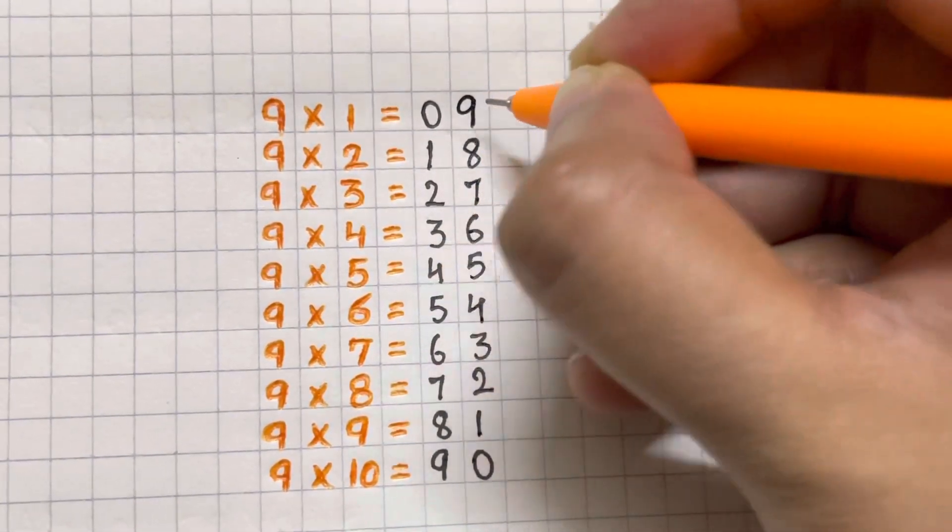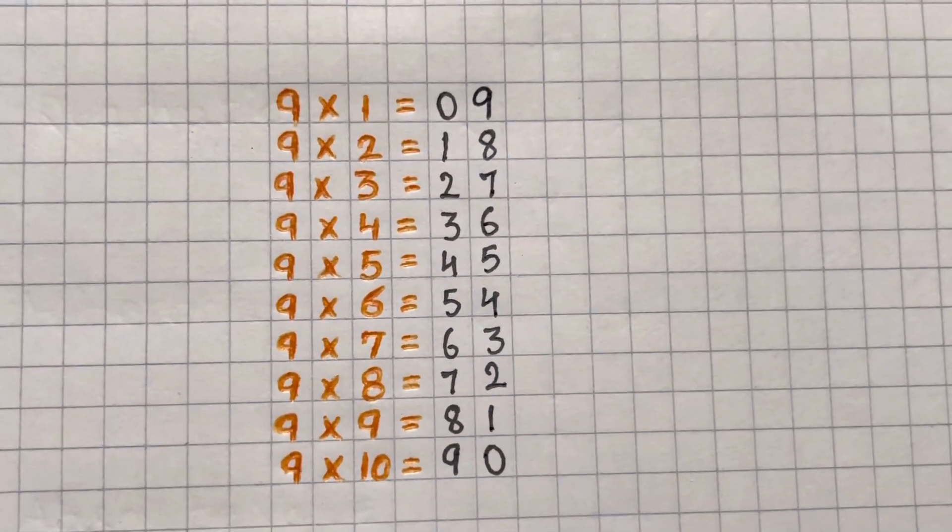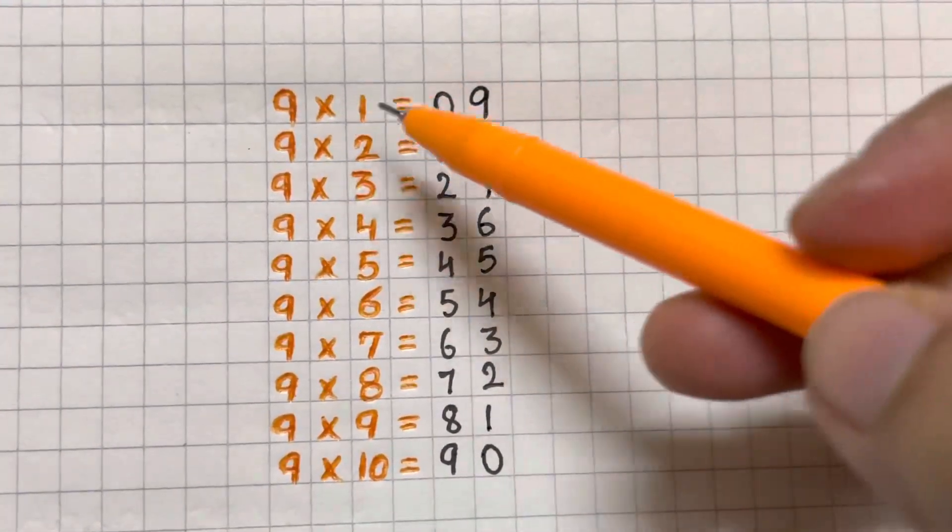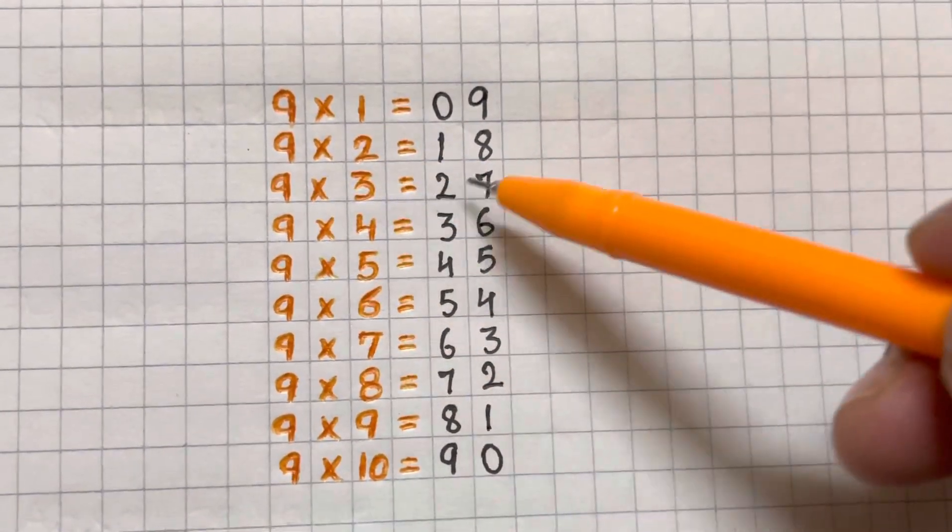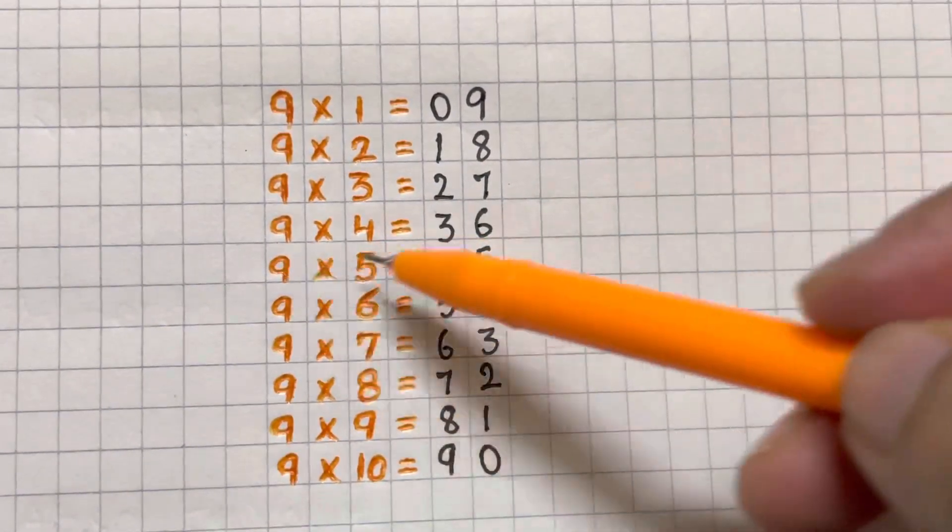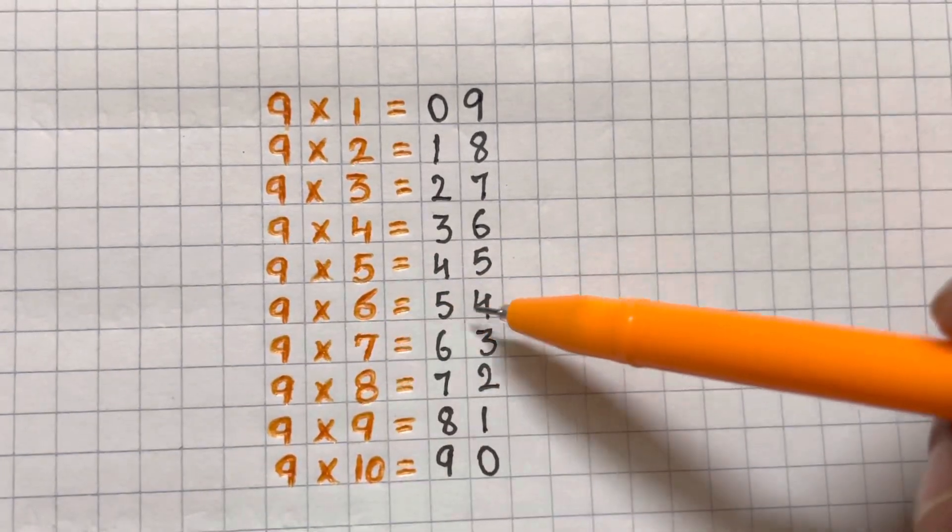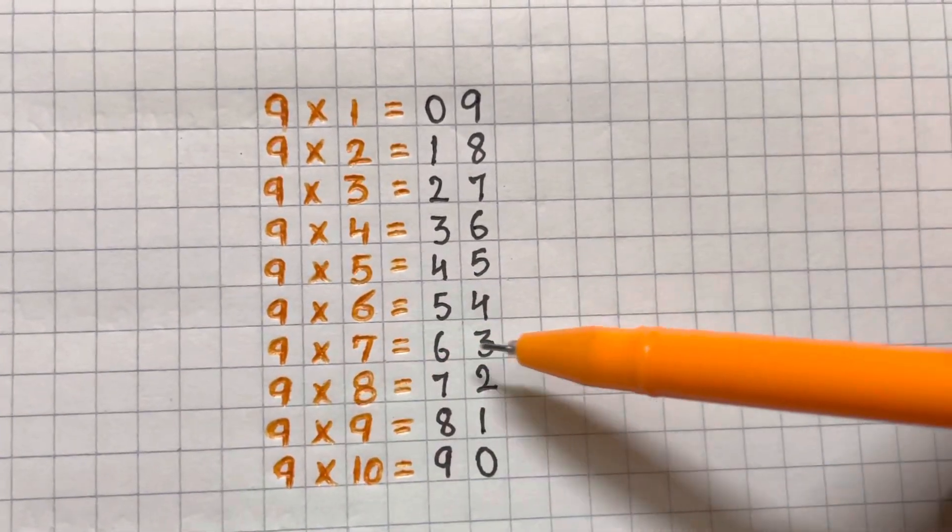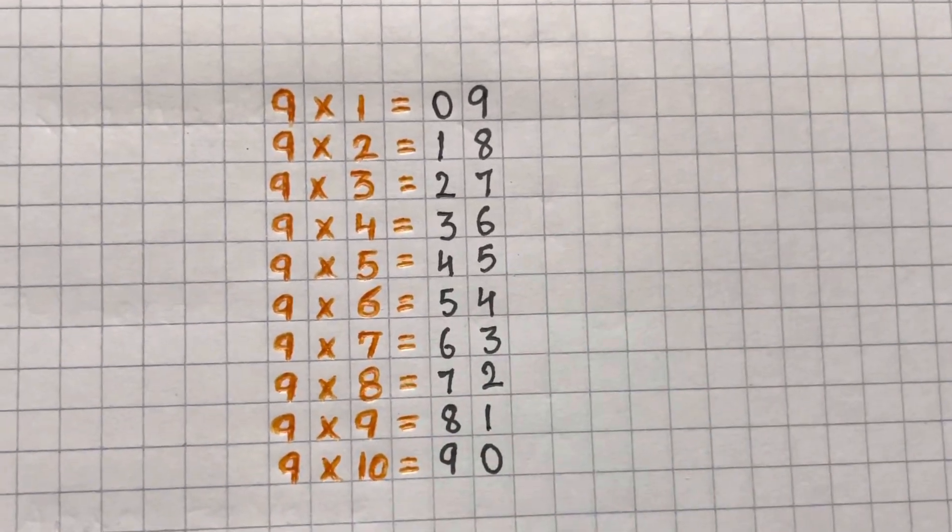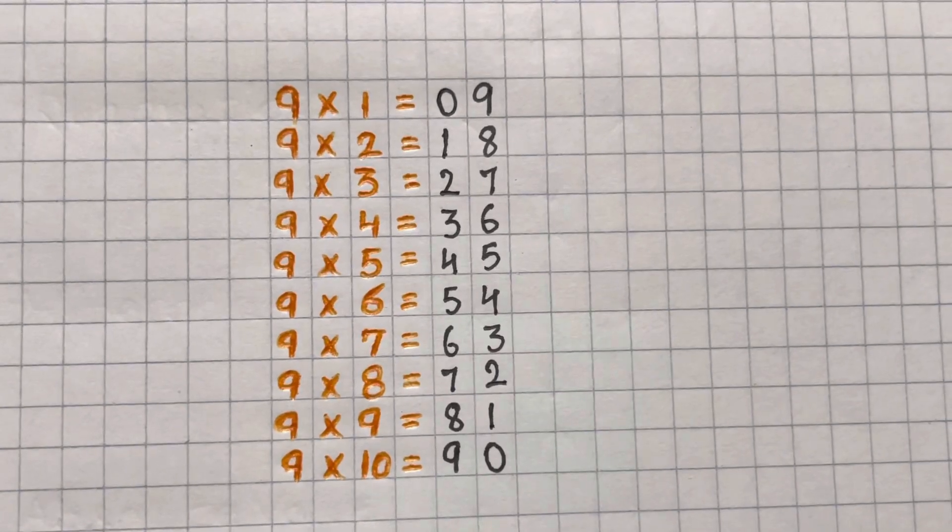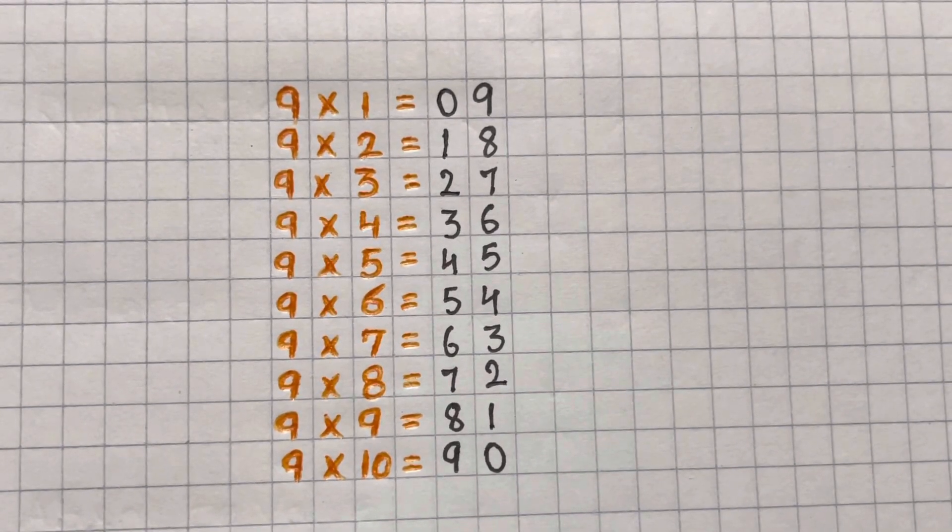So and it's completed. So guys, nine times one is nine, nine times two is eighteen, nine times three is twenty-seven, nine times four is thirty-six, nine times five is forty-five, nine times six is fifty-four, nine times seven is sixty-three, nine times eight is seventy-two, nine times nine is eighty-one, nine times ten is ninety. Amazing guys.